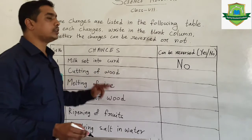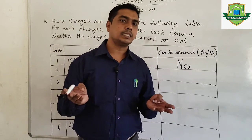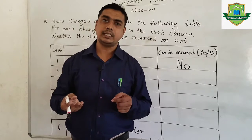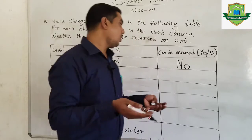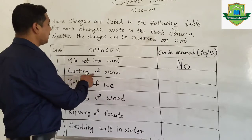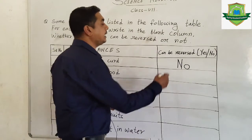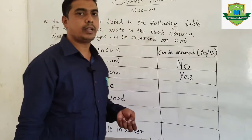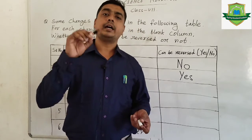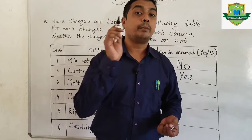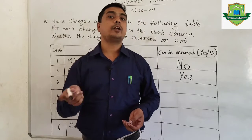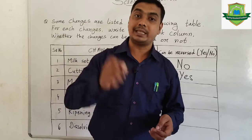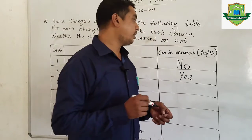Second question: cutting of wood. Imagine you are cutting a wood — is a new substance formed? Earlier it was a long log of wood; when you cut it, it becomes a small piece of wood. There is no change in substance. So cutting of wood comes under physical change only — you can reverse it. Remember, don't be confused: cutting of wood comes under physical change, which can be reversed. But burning of wood — if it is burning of wood, you cannot get it back. Once the wood gets burned, it converts into ashes and you cannot get wood back from ashes. So that is a chemical change, which you cannot reverse.